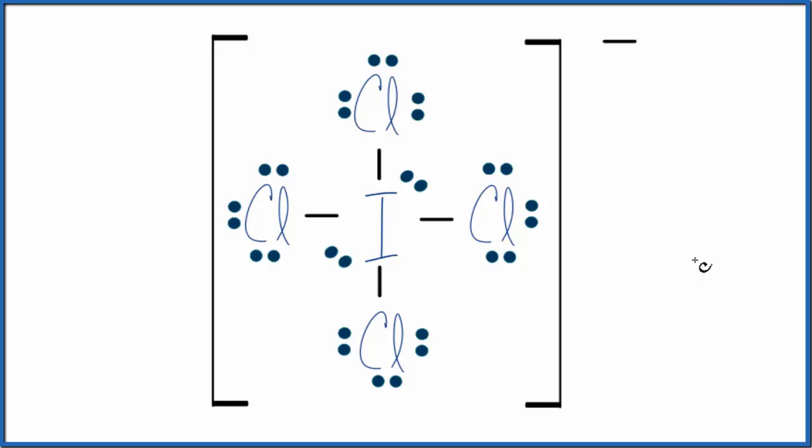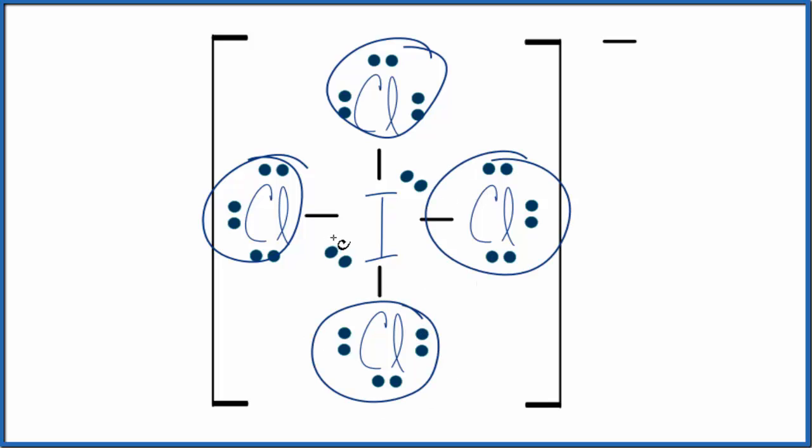One is we could look at the steric groups attached to the central iodine. So we have one, two, three, four, five, six things attached. So the steric number is six.